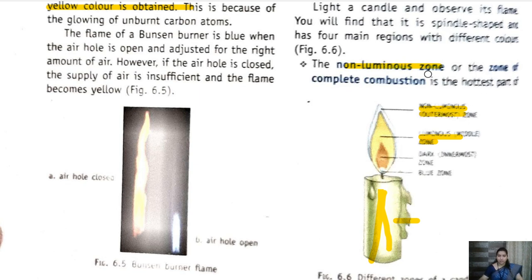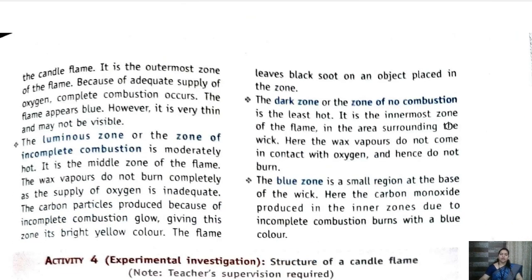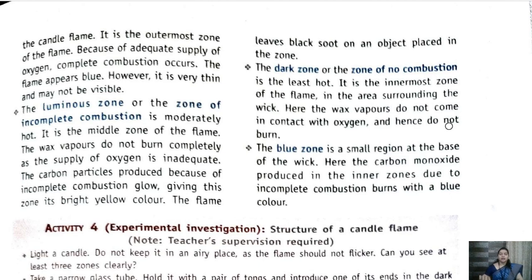So the outermost zone is the non-luminous zone, which is the zone of complete combustion because oxygen is present in sufficient amount. Since complete combustion takes place, a large amount of heat is released — hence it is the hottest part. A question can arise: which is the hottest zone? Arranged from outer to inner: non-luminous, then luminous, then dark, then blue zone.